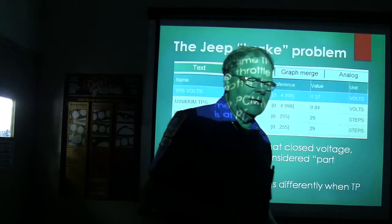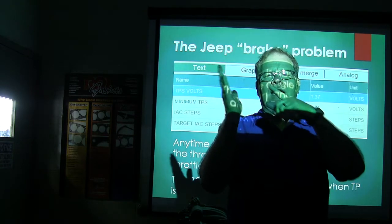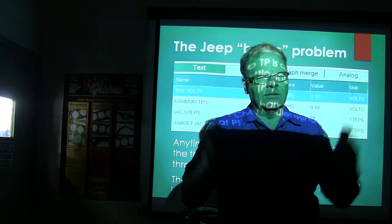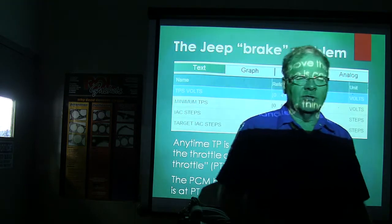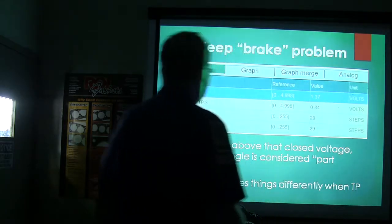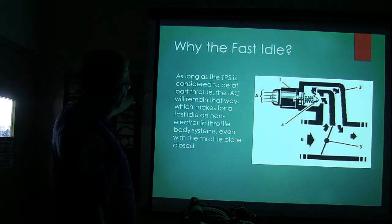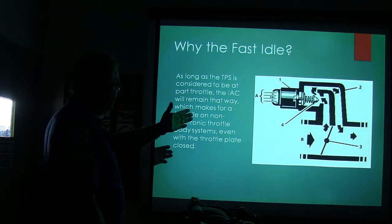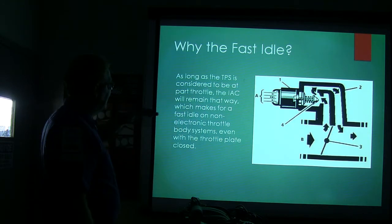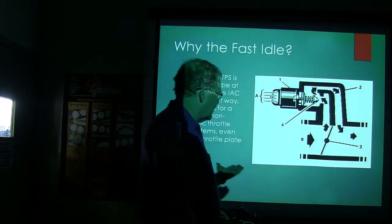On older carbureted vehicles there was a dashpot — a little device that let the throttle come back slowly so the engine wouldn't stall. These idle air control systems do the same thing; the PCM is programmed with a dashpot function. As long as TPS is considered at part throttle, the idle air control remains in dashpot mode with extra air, making for a fast idle even with the throttle plate closed.